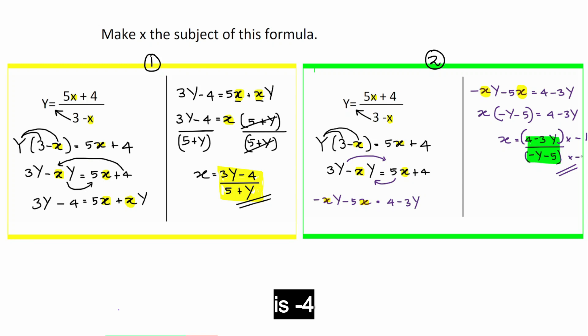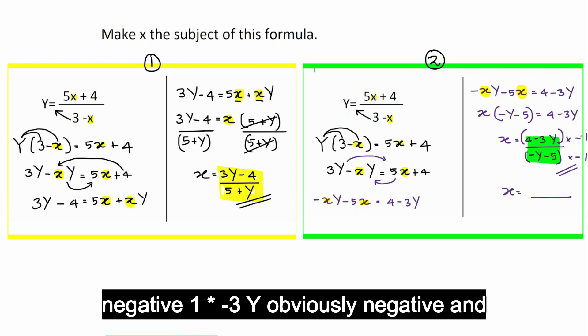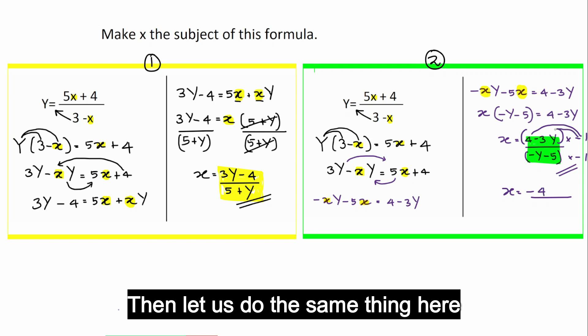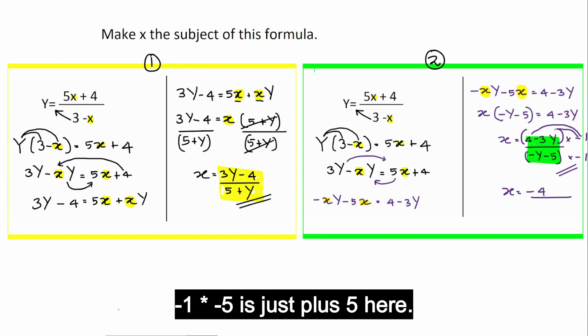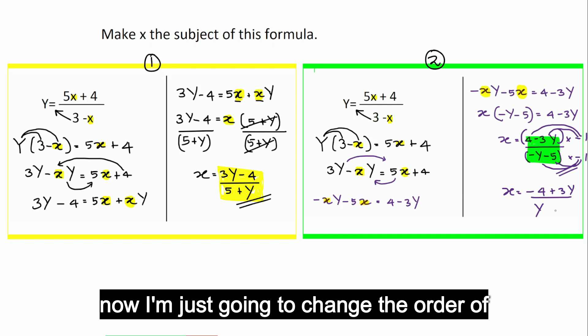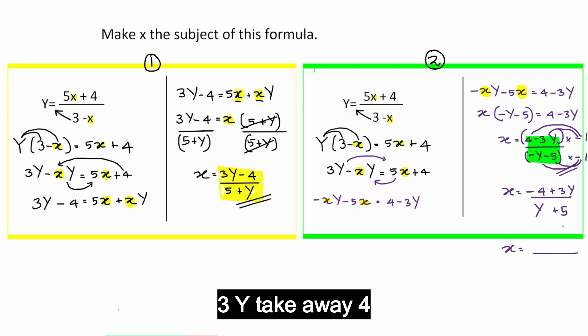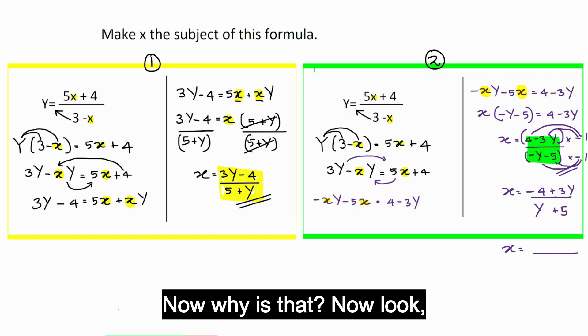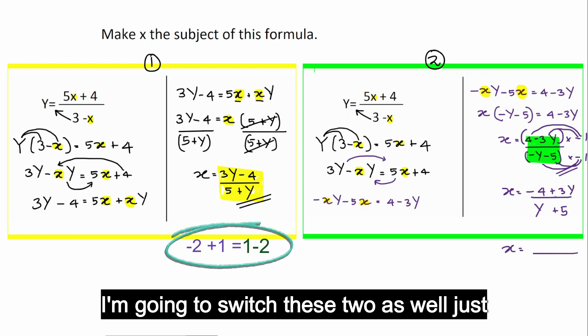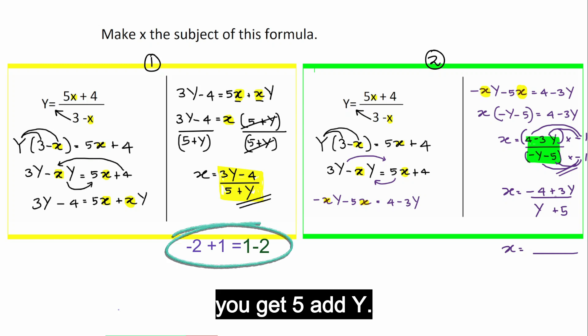x is equal to negative 1 times 4 is negative 4. Negative 1 times negative 3y, obviously negative and negative is positive, that gives me 3y. Then, let's do the same thing here. Negative 1 times negative y is positive y. Negative 1 times negative 5 is just plus 5. Now, x is equal to, I'm just going to change the order of these two. It really doesn't matter. 3y take away 4. Look, if you had negative 2 and 1 is exactly the same as 1 take away 2. Like that, I just switch these two. I'm going to switch these two as well. You get 5 at y.